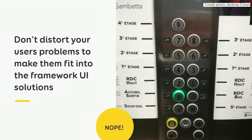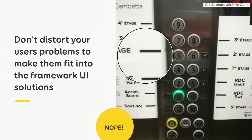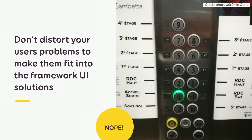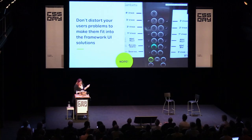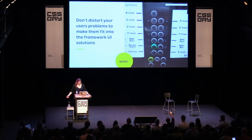But sometimes the UI components you have will not solve your user needs, and here is an example of what might happen if you try to force it. The building has four floors; the elevator UI component has ten floors — obviously this is not the right design solution, but they still tried to make it work. If you want to go to the second floor, you press five or six. It's a nightmare. Also, it's not accessible anymore — blind people will never be able to use that kind of thing. Don't distort your user problem and don't try to make users fit into your solution because it will not work.